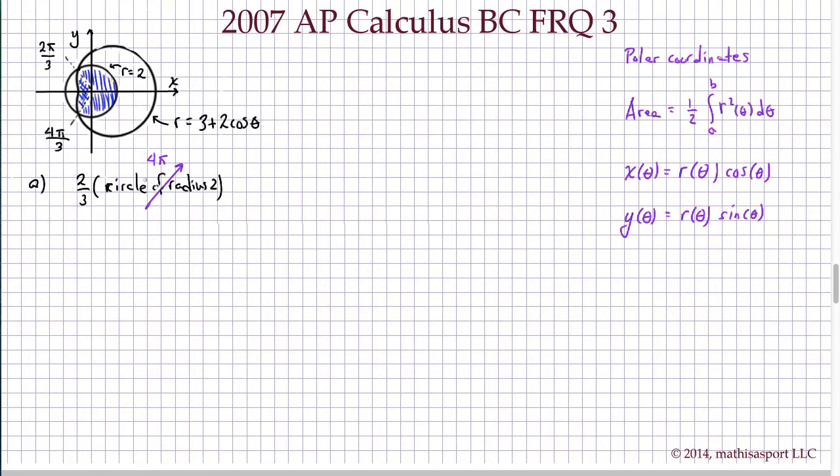We're going to take two-thirds of that. Then all that's left is an integral involving this second r function, 3 plus 2 cos theta. That's going to be an integral from 2π/3 to 4π/3, and the function we're integrating is ½ r² dθ, where r is 3 plus 2 cos theta.